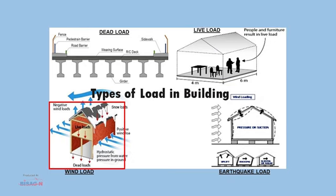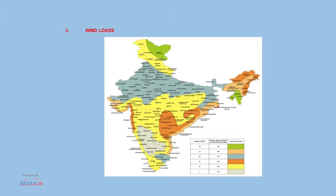Wind load. Wind loads are the loads which come in any structure primarily due to horizontal movement of wind relative to earth. The details of design for wind load are given in IS 875 Part 3. Wind load is required to be considered in design especially when the height of building exceeds two times the dimension transverse to the exposed wind surface. As per IS 875 Part 3, there are six zones specified in the code based on increasing wind speed.